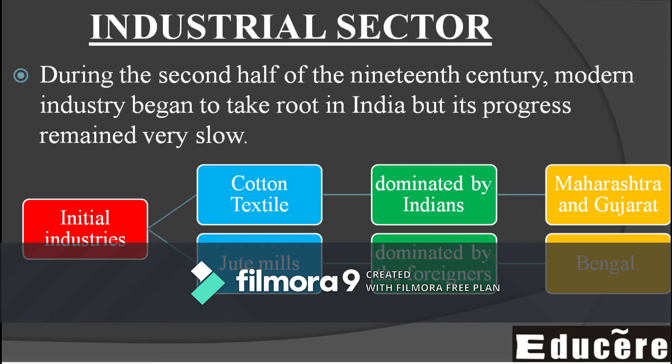The second half of the 19th century means from around 1850 onwards. The 19th century runs from 1801, so the latter half starts from 1850. It was during this later period that the first modern industries were established in India.